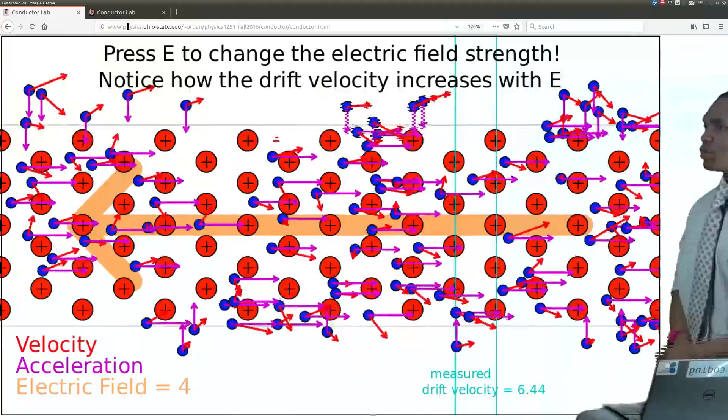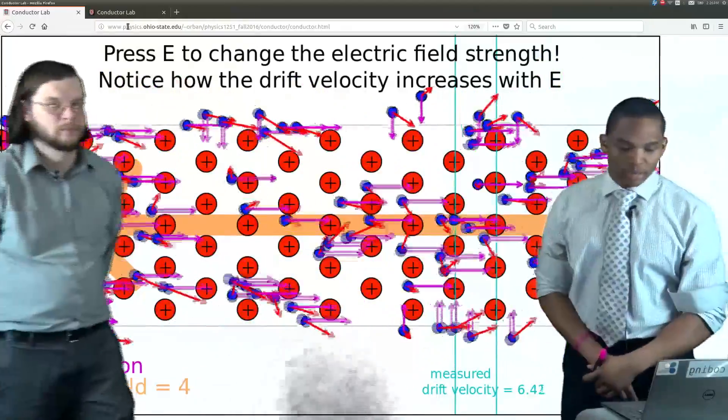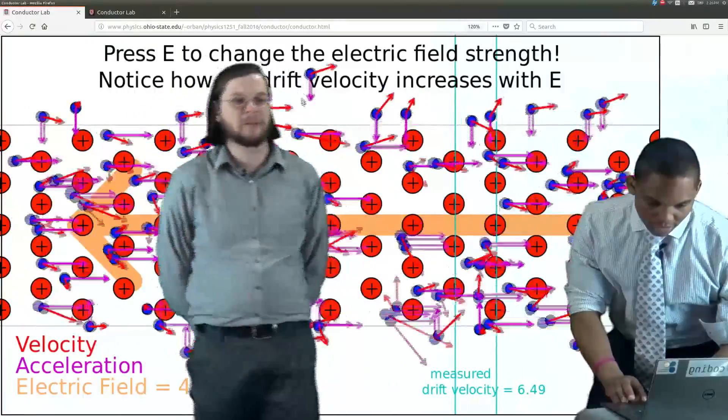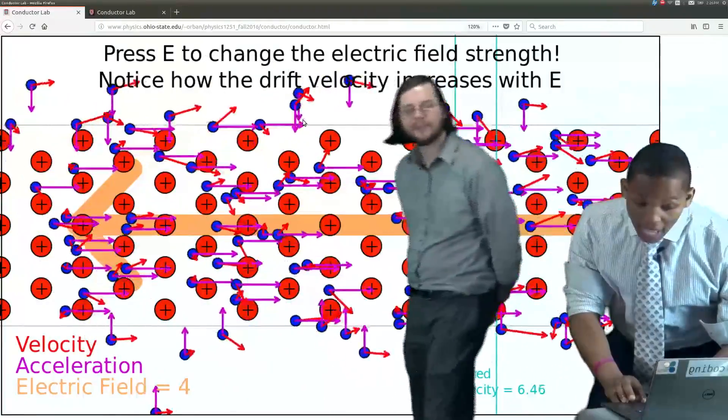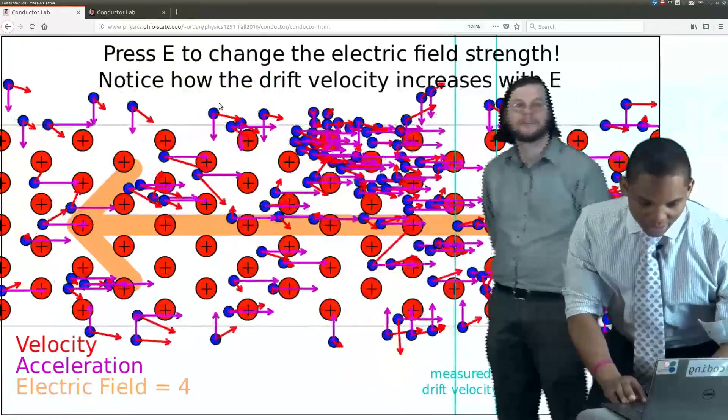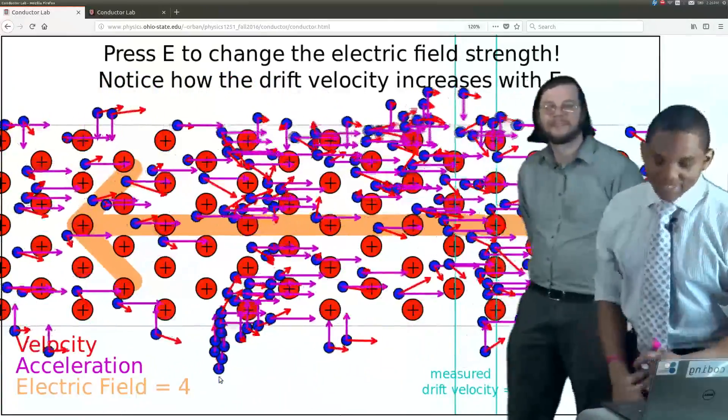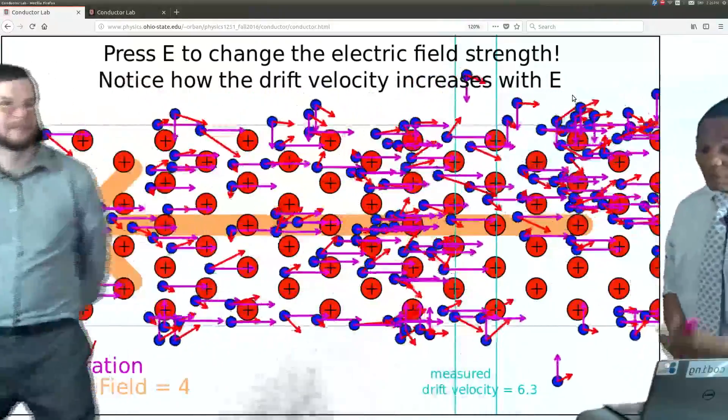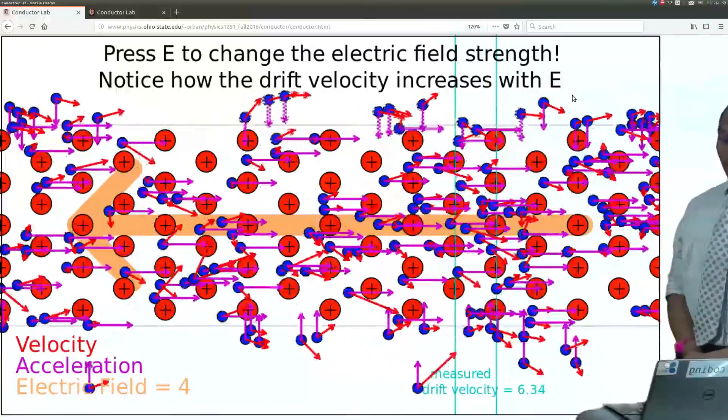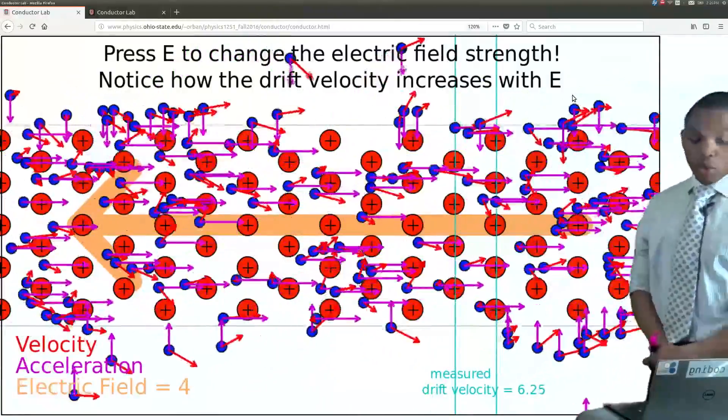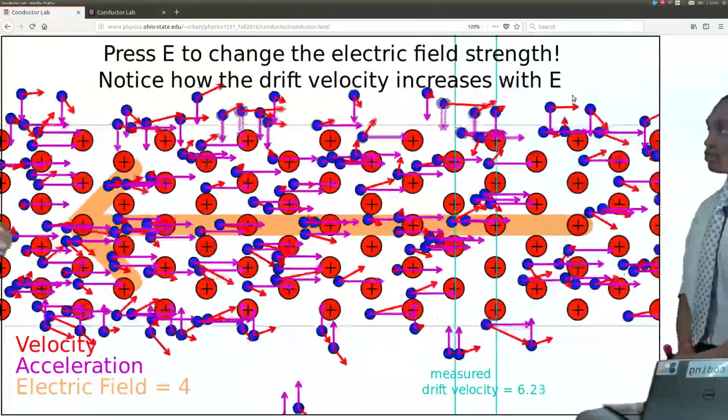And one cool thing we forgot to point out is that in this interactive, you can actually add stuff to it. Add more. So the one thing, I love doing this. So you can kind of like, whoosh. So that's pretty cool. That's pretty fun. So, yeah. But if you increase the electric field, the electrons will accelerate more to the right or to the opposite direction of the electric field.